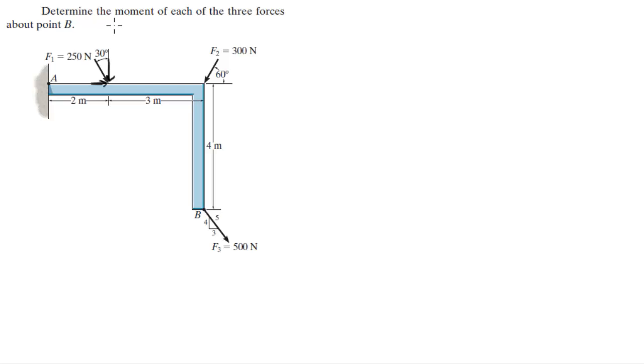So F1_X is equal to 250 sine of 30, which is exactly 125 newtons. And the Y is 250 cosine of 30, which is exactly 216.5 newtons. Then F2 has a Y component and an X component.